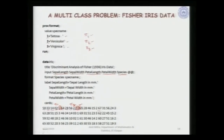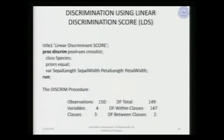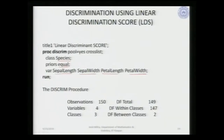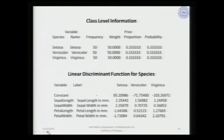Based on this learning sample data, we are going to build our classification model. As we have seen various approaches, the first is the Fisher linear discriminant score. We use proc discrim in SAS with the class membership as the species, taking equal priors for the three populations, and the feature vector has these four variables.